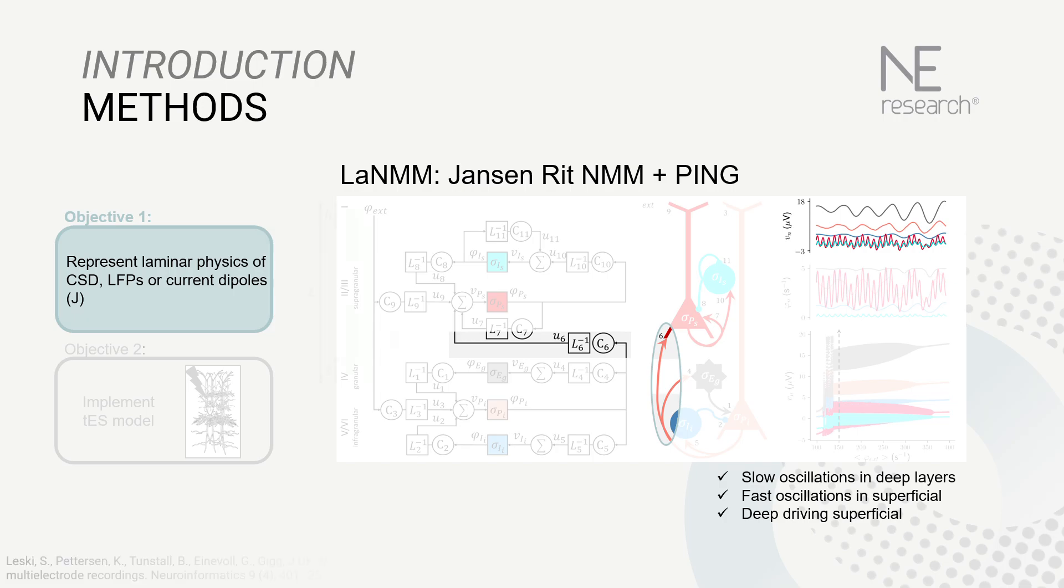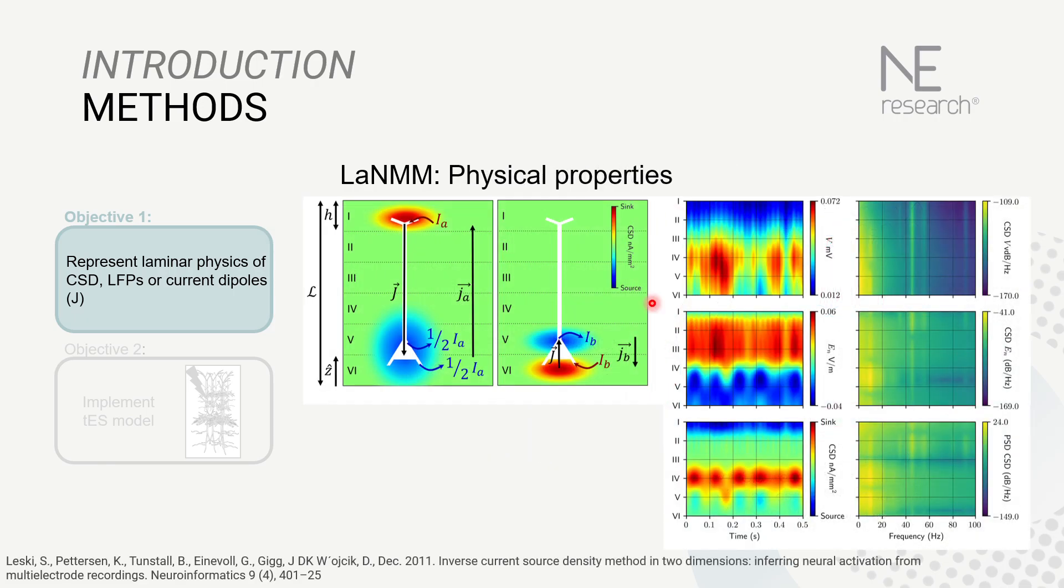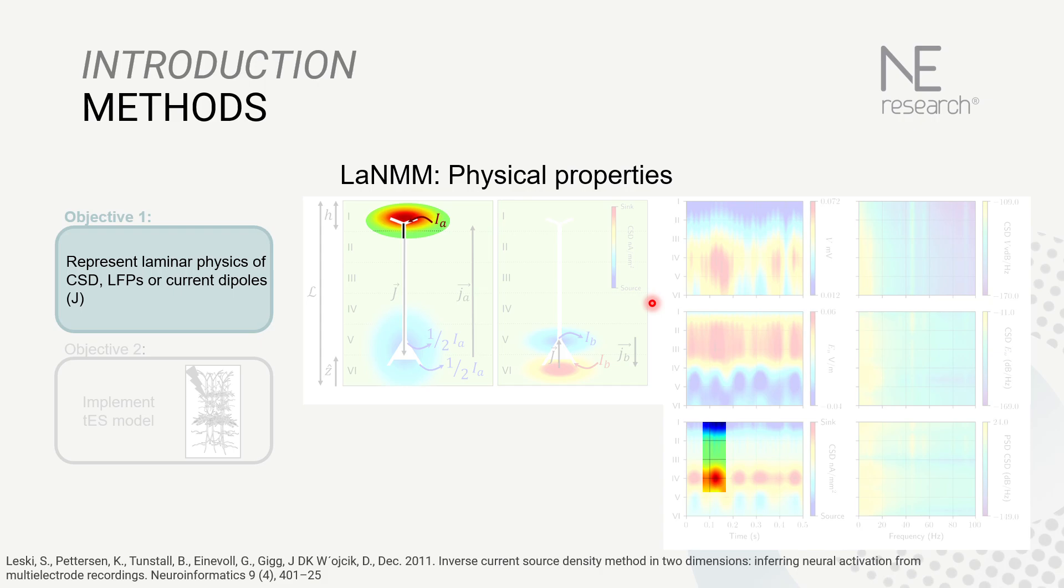So that's the physiology. What about the physical properties of this model? To represent these physical properties, we assign locations to apical and basal dendritic tufts of pyramidal populations and track the currents generated by synaptic inputs, which are derived from the membrane perturbations of the neural mass model.